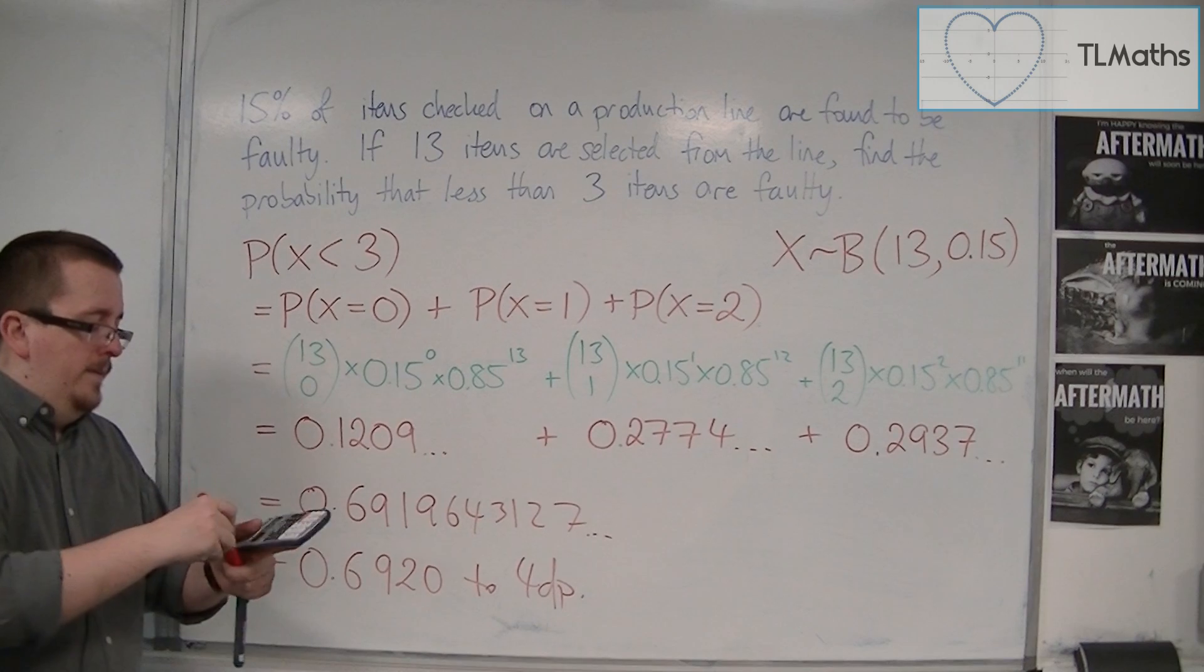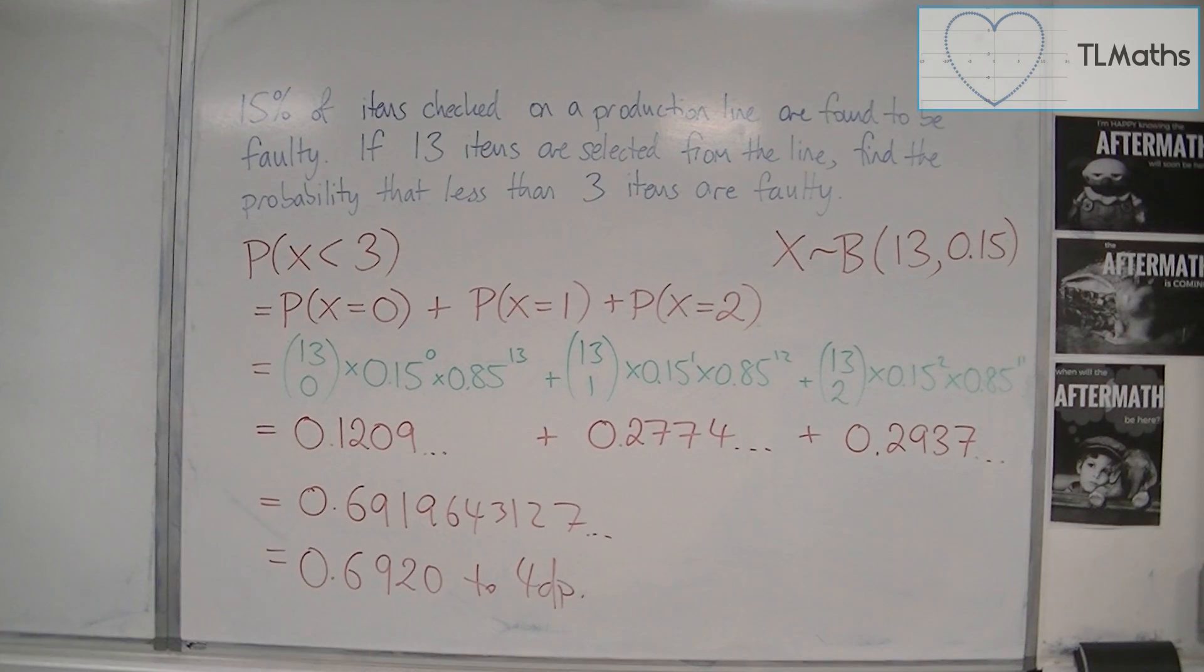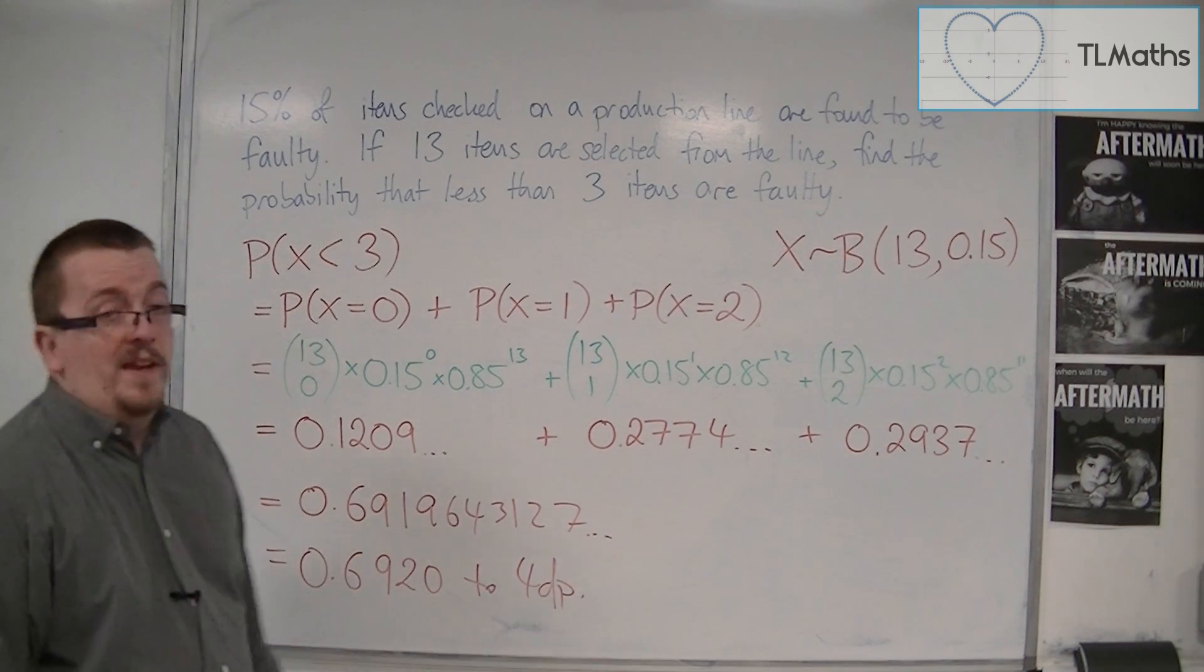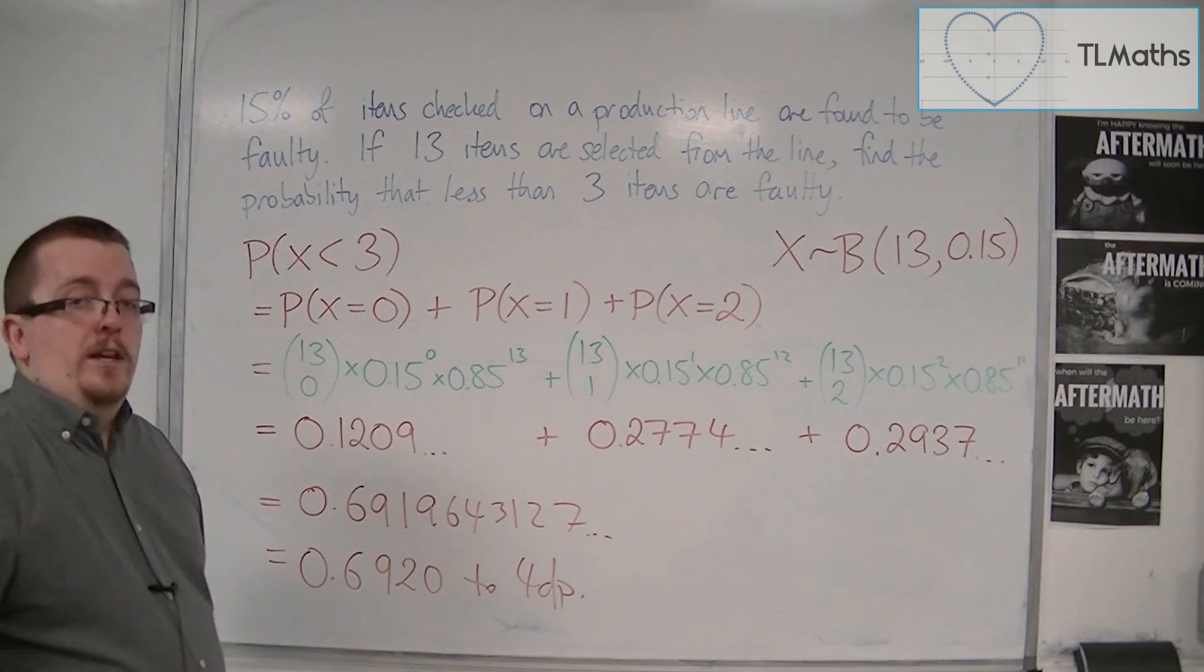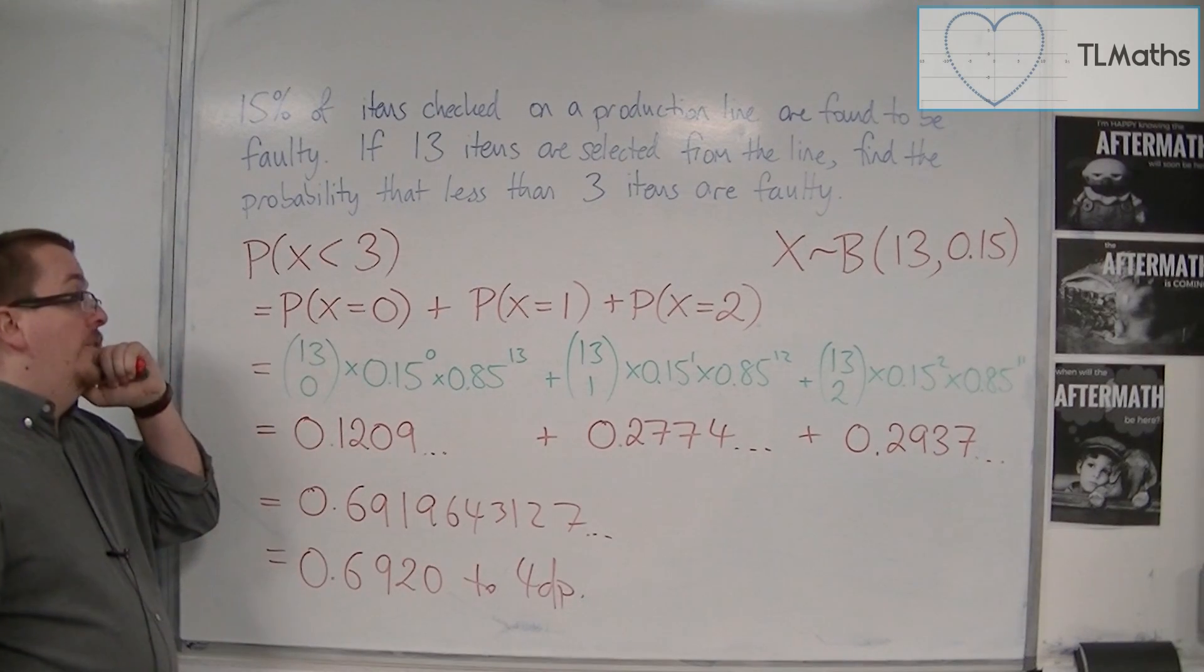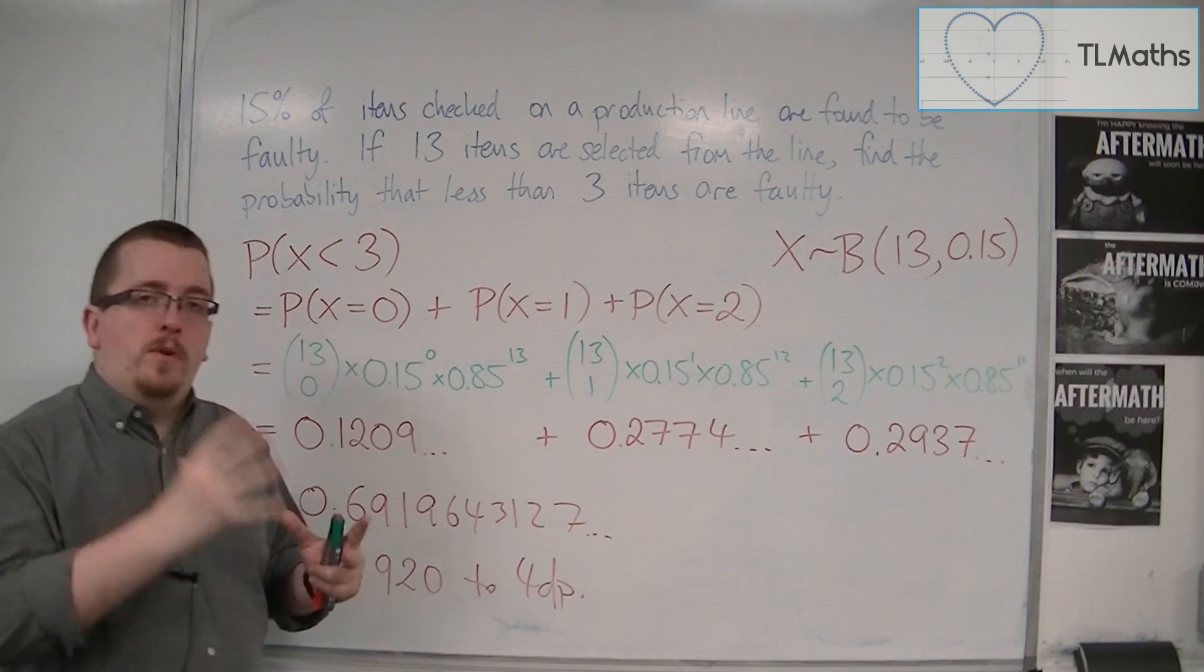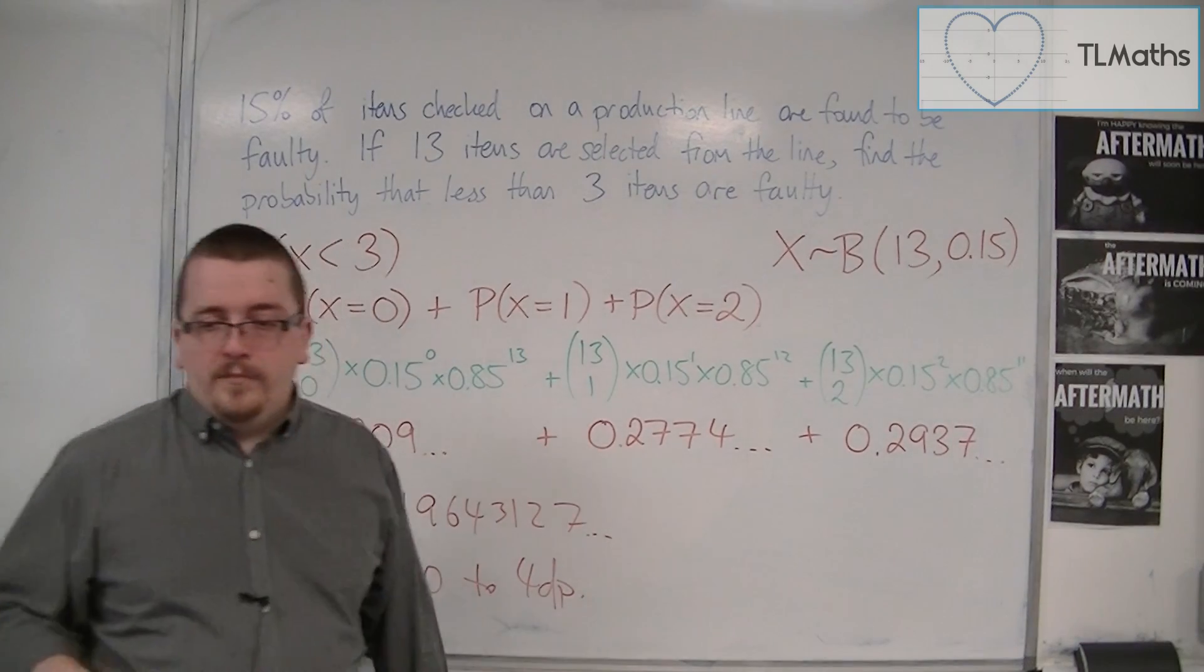Now, as you can see, this is quite long-winded. And on top of that, if I was to find the probability of X being less than 8, then I'd have 7 calculations to add together, or if this number was 20 and I wanted to find the first 10 added together, then you can see that this calculation for the probabilities can get very long and arduous.